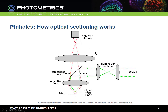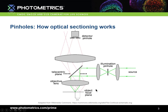Light from other focal planes, such as light from below our chosen plane, will also pass through the system but won't come to a tight focus, and the majority of this light will be blocked. The same is true for light from above our focal plane, and additionally for light coming from the side. Only light from the exact point that we want to image will reach the detector.